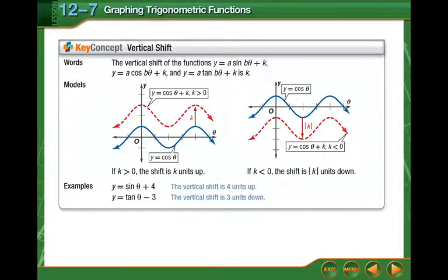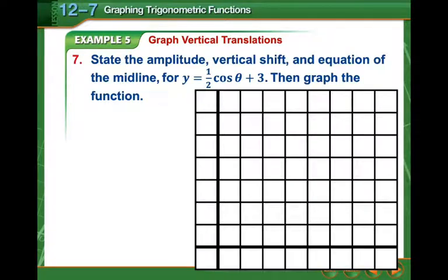So now the vertical shift part, the K. This is where it shifts up and down. This all happens after everything else. So you go ahead and do your shift. You do everything else to the graph, and then you shift it up. You don't do that in the middle, or else it's going to cause some problems. We want to state the amplitude, vertical shift, and equation of the midline of this one. One-half cosine theta plus 3. That plus 3 is outside of the parentheses with theta, so that means it's shifting up 3. Our period, this is cosine, so it's 360. There's nothing being multiplied by theta, so it's 360 still. Our amplitude is now one-half, and our equation of the midline in this case is a horizontal line at y equal to 3 instead of 0, which is usually where it is.